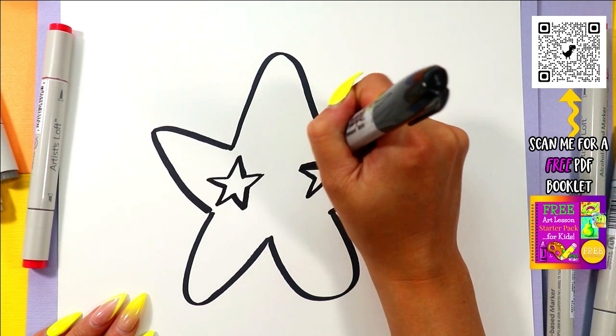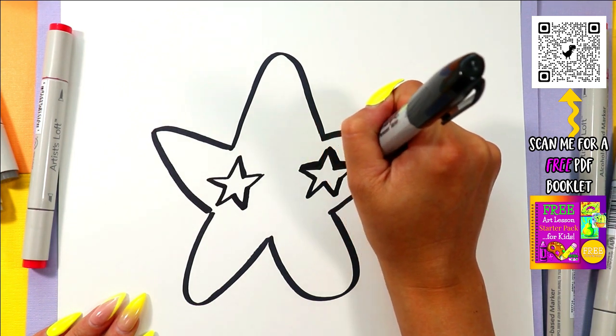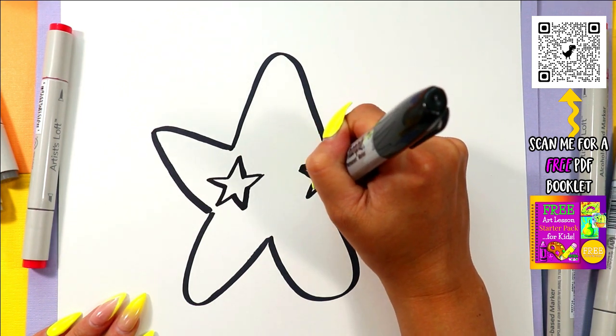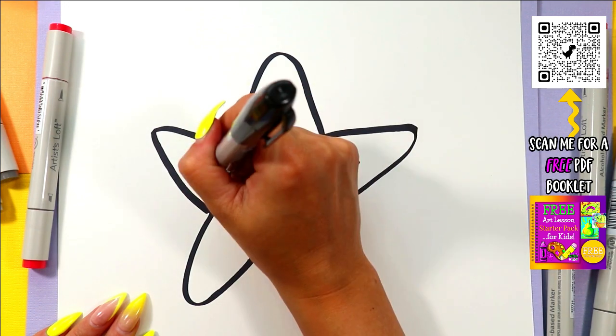They don't need to be perfect. Just need to look like a star. Alright. Thicken up the border to make them defined.